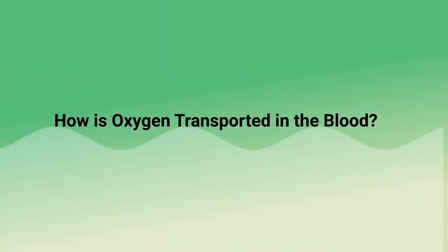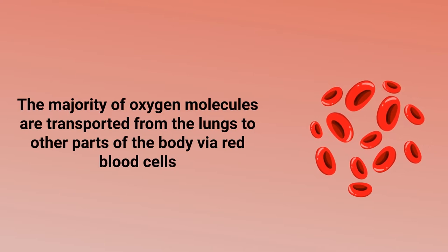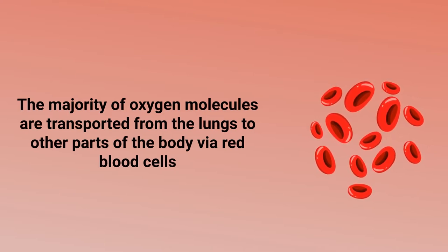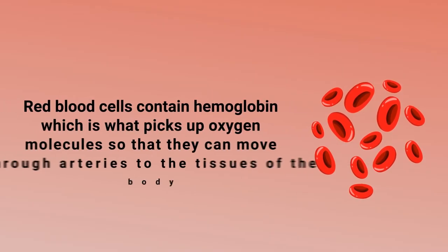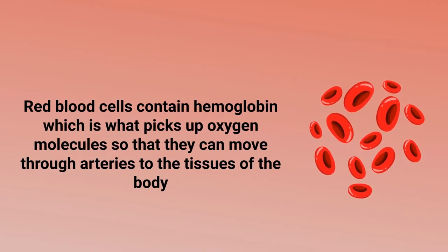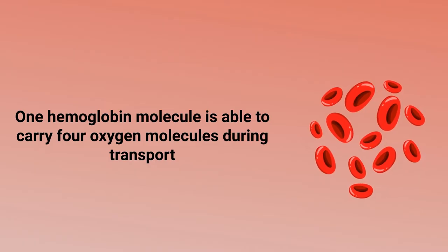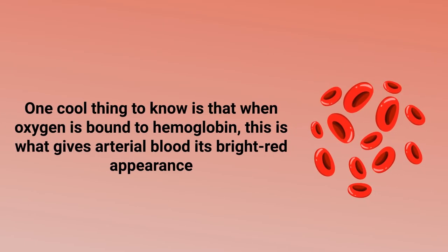How is oxygen transported in the blood? The majority of oxygen molecules are transported from the lungs to other parts of the body via red blood cells. Red blood cells contain hemoglobin, which is what picks up oxygen molecules so that they can move through arteries to the tissues of the body. One hemoglobin molecule is able to carry four oxygen molecules during transport.